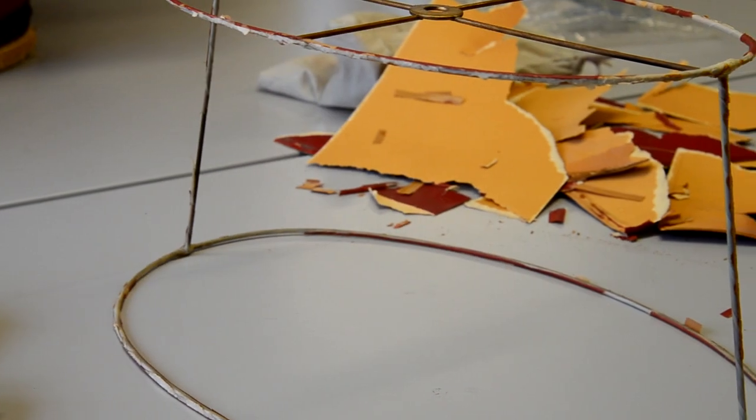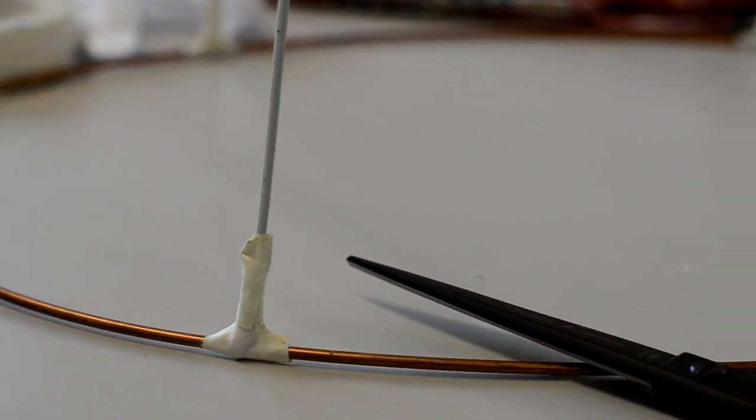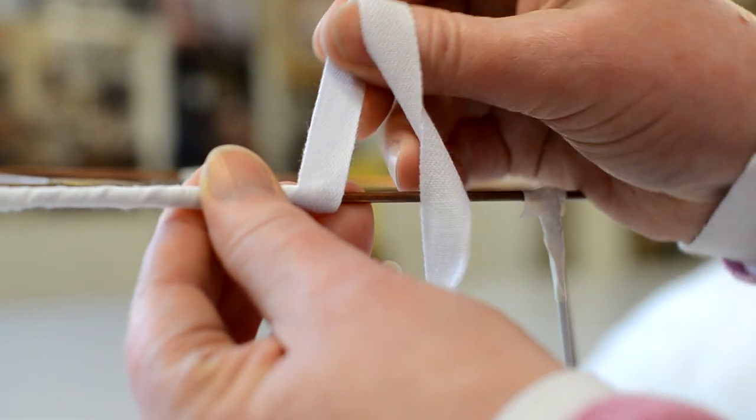It required extra struts in order to support the new shade it was going to get. Once the structural work was done, it was simply a matter of adding tape to the bottom and top of the frame and going through the normal procedure as you would with any shade.